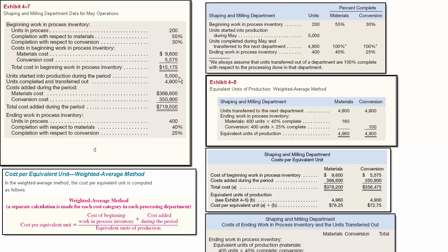They tell us that they started into production 5,000 units, completed 4,800 of them and transferred them out. Here were the costs that were added during the period — material and conversion costs added. At the end of the period, we know there were 400 units still in process: 40% done with respect to materials and only 25% with respect to conversion.